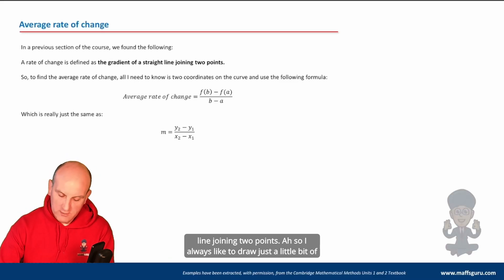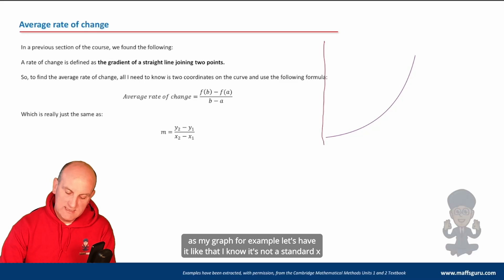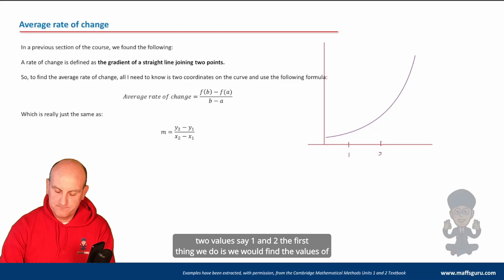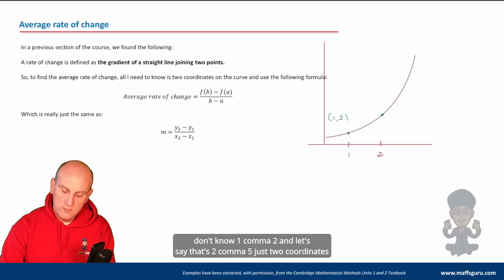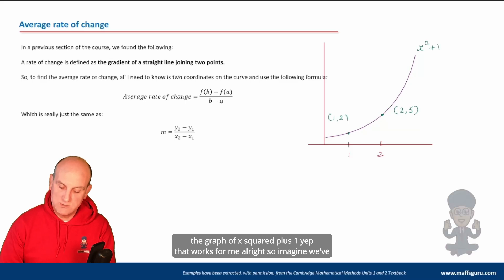I always like to draw a little graph — I always draw my standard y equals x squared. If we think of this as my graph, and I wanted to find the average rate of change between two values, say one and two, the first thing we do is find the values of those two coordinates. Let's say that's one comma two and two comma five — two coordinates I've made up off the top of my head.